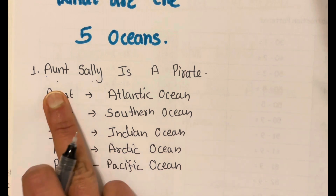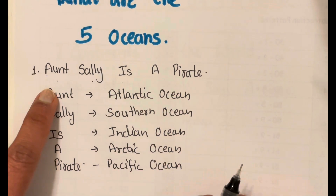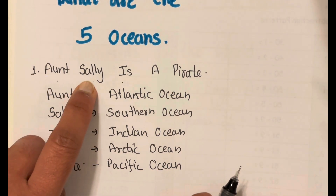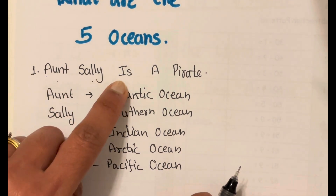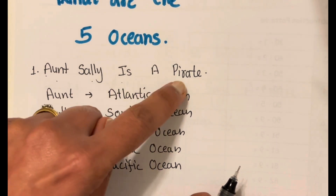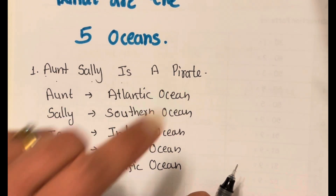Or you can say Aunt Sally is a pirate. Aunt — Atlantic Ocean. Sally — Southern Ocean. Is — Indian Ocean. A — Arctic Ocean. And pirate — Pacific Ocean.